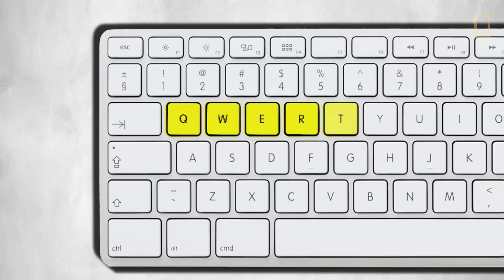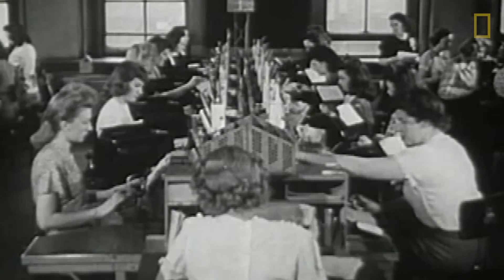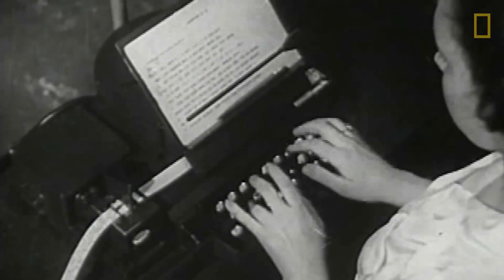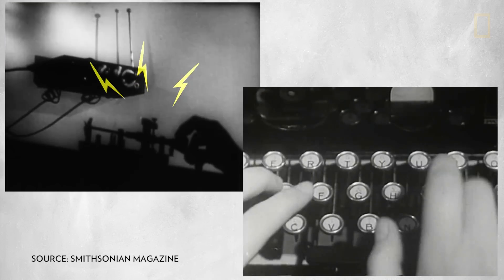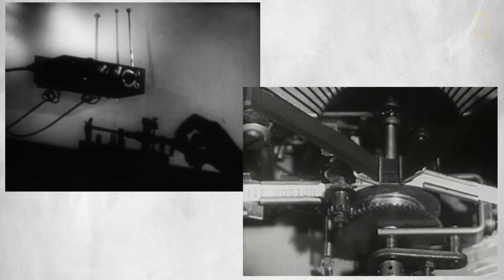Named after the letters of the top six keys, the QWERTY keyboard was designed to help the earliest typists, telegraph operators. They needed an efficient typing device that could keep up with all the Morse code beeps and pauses they translate into letters and numbers.